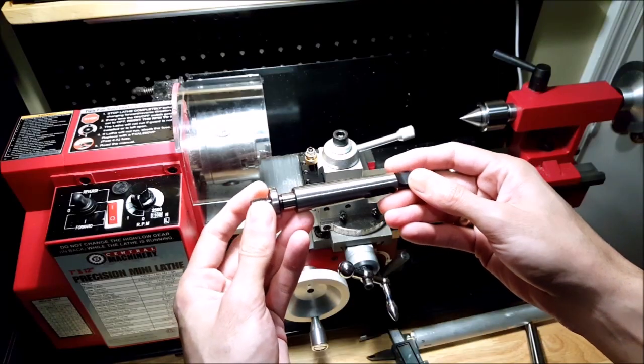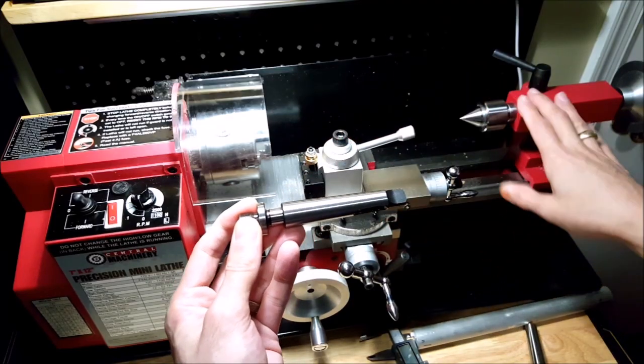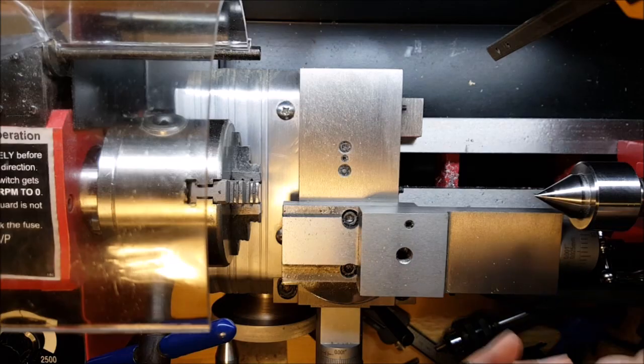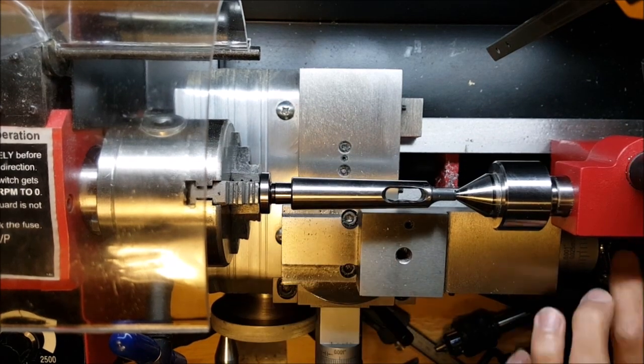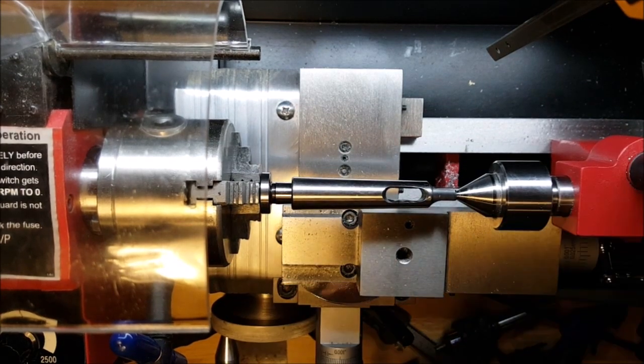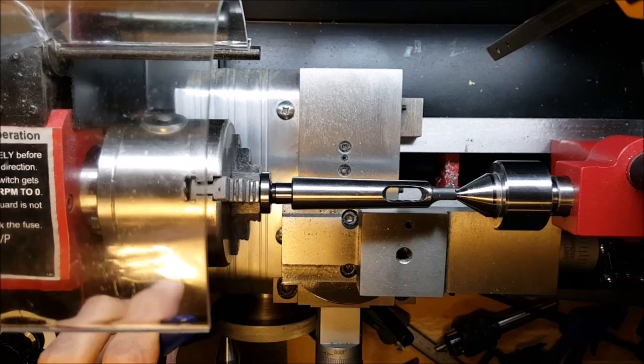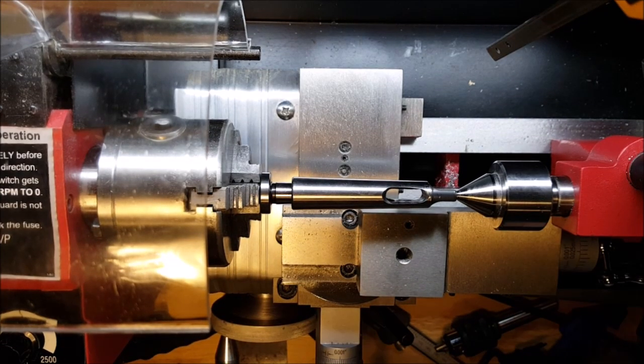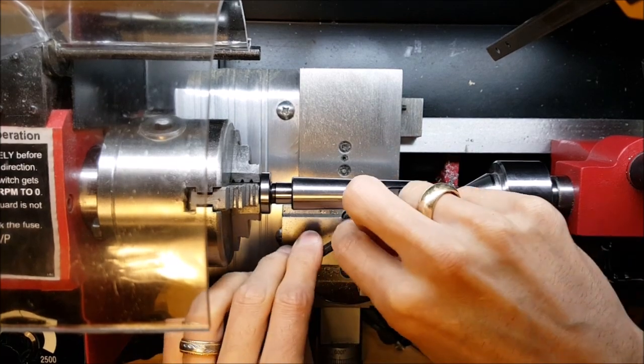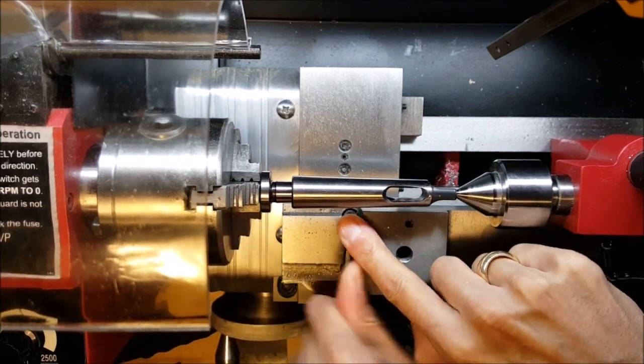First thing we need to do is turn a number two morse taper to fit this lathe's tailstock. A neat trick for turning tapers when the accuracy depends more on you than on the lathe is you put the taper you want to match on the chuck and secure it in place, and we're losing this thing here if you have this kind of flavor of course.